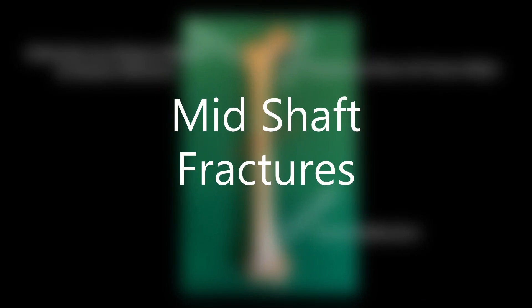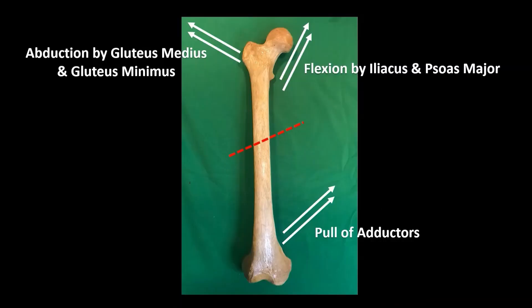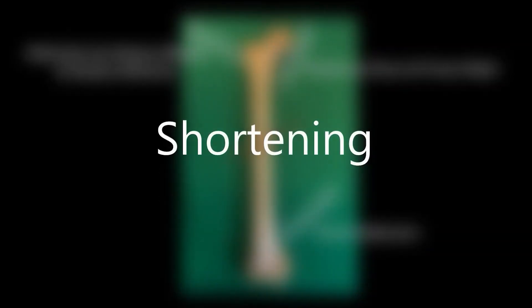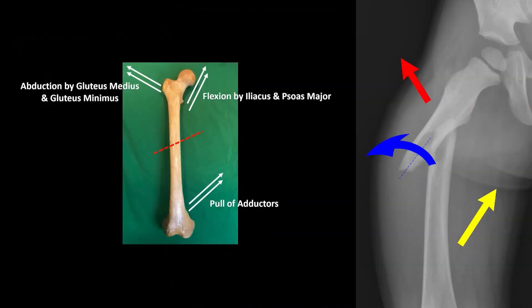Midshaft fractures. Fractures of the femoral shaft are accompanied by considerable shortening as a result of longitudinal contraction of the extremely strong surrounding muscles. The proximal segment is flexed by iliacus and psoas and abducted by gluteus medius and minimus, whereas the distal segment is pulled medially by the adductor muscles.